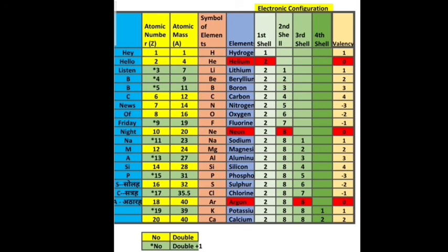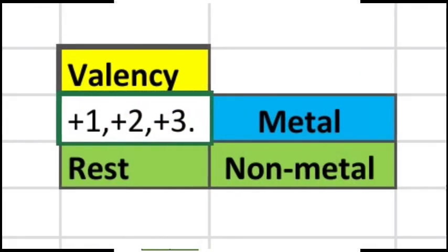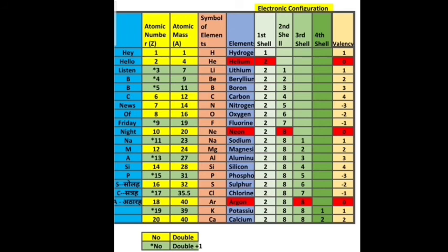The outermost shell of oxygen has 6 electrons, so its valency is 8 minus 6, which equals minus 2. The outermost shell of chlorine has 7 electrons, so its valency is 8 minus 7, which equals minus 1. Elements with valency +1, +2, or +3 are metals; the rest are non-metals. In the next video, I will explain cations and anions — till then, goodbye.